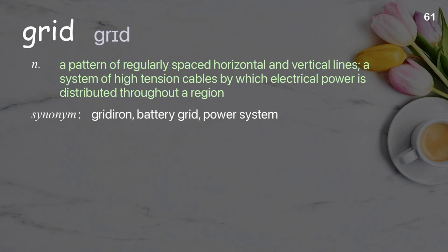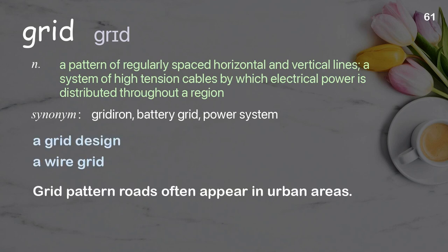Grid: A pattern of regularly spaced horizontal and vertical lines; a system of high-tension cables by which electrical power is distributed throughout a region. Examples: A grid design. A wire grid. Grid pattern roads often appear in urban areas.